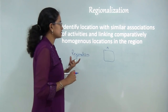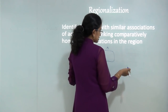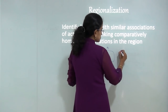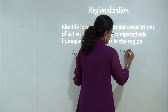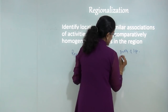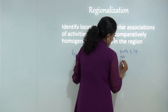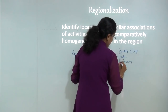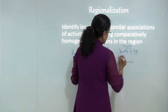Under regionalization, I try to provide similar characteristics - say characteristics leading to quality of life, basic education level, and literacy. These are the parameters I have taken as social parameters.